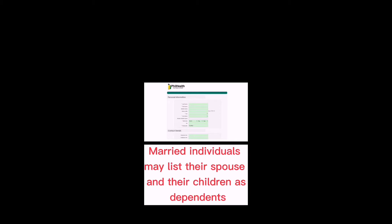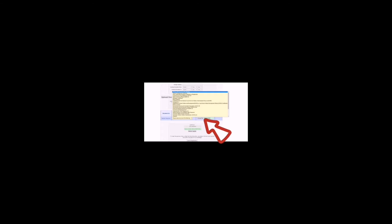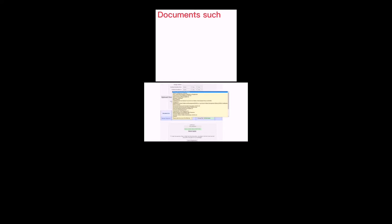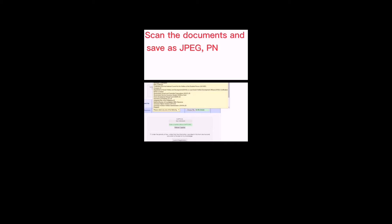Married individuals may list their spouse and their children as dependents. Next is to upload supporting documents. Below, you select what kind of documents you're going to upload. You can upload documents such as a birth certificate, passport, or driver's license. You must scan these documents first and save them as JPEG, PNG, GIF, or PDF format — those are the only accepted file types.